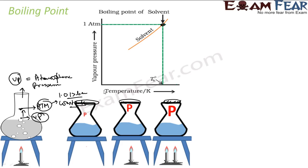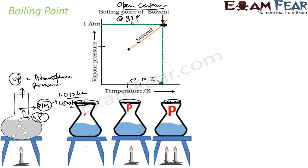If you see this graph: if you lower the temperature, this is the boiling point of the solvent; if you increase the temperature, the vapor pressure increases. For example at 5°C the vapor pressure is at some low value; at 10°C it is higher. You increase it further to the boiling point and the vapor pressure equals 1 atmospheric pressure, then it starts boiling — this is for an open container at STP.